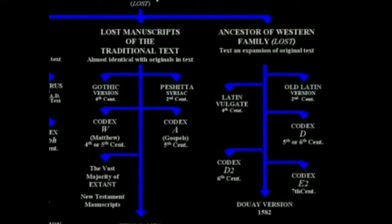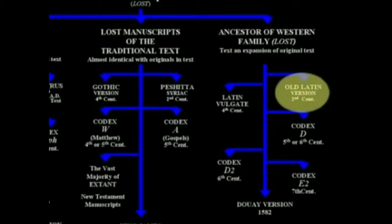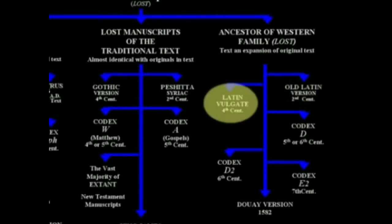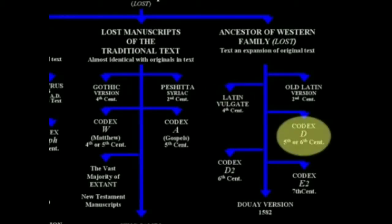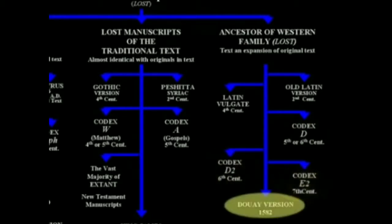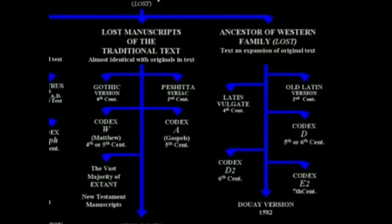The text is an expansion of an original text. There you have the Old Latin Version, the Latin Vulgate Version — which the Pope declared to be infallible — Codex D, Codex D2, Codex E2, and the Douay Version of 1582, which was written to counteract the Reformation. That's the one stream.